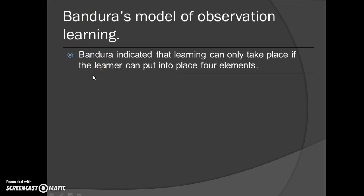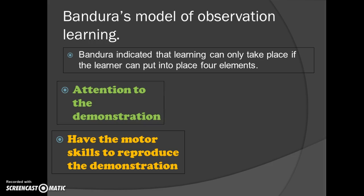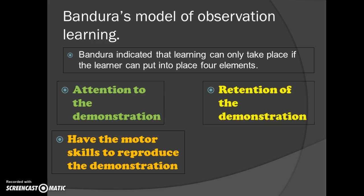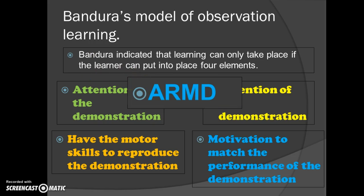Bandura indicates that learning can only take place if the learner has these four things in place. They have the motor skills to reproduce the behavior — in other words, the ability or the skill. The attention — are they actually focused on it? Can they recall what they've seen? And also the motivation — can you be bothered to actually do that? The way that we remember this is to be ARMED: are you armed to observe and then perform?